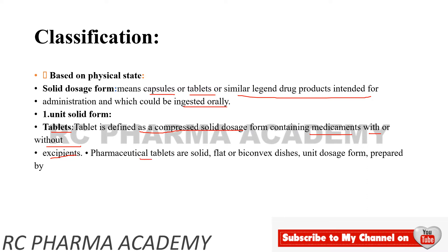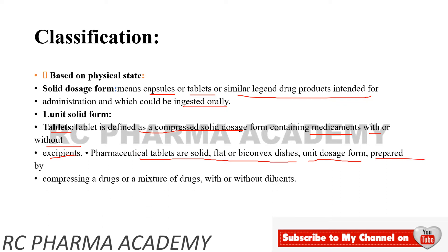Pharmaceutical tablets are biconvex or flat unit dose forms prepared by compression of drugs or a mixture of drugs with or without a diluent. The diluent increases the bulkiness of the drug; an example is lactose monohydrate.